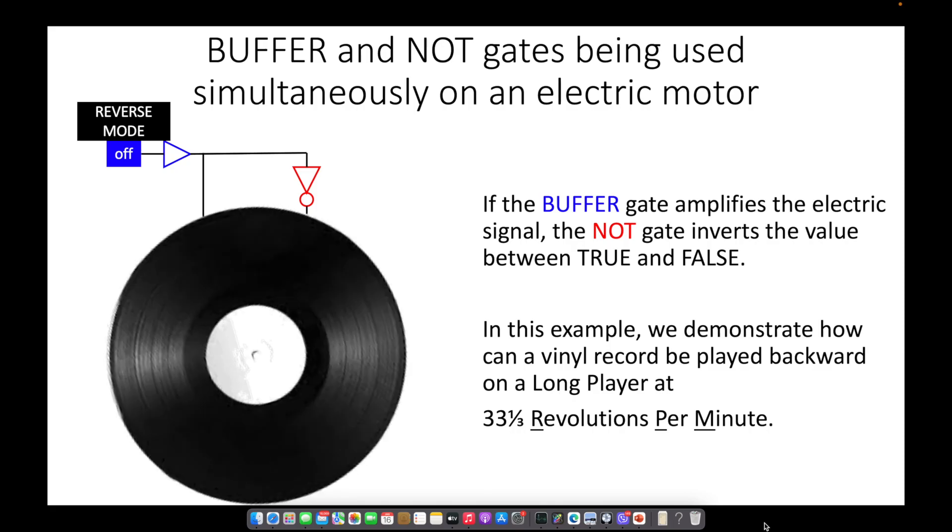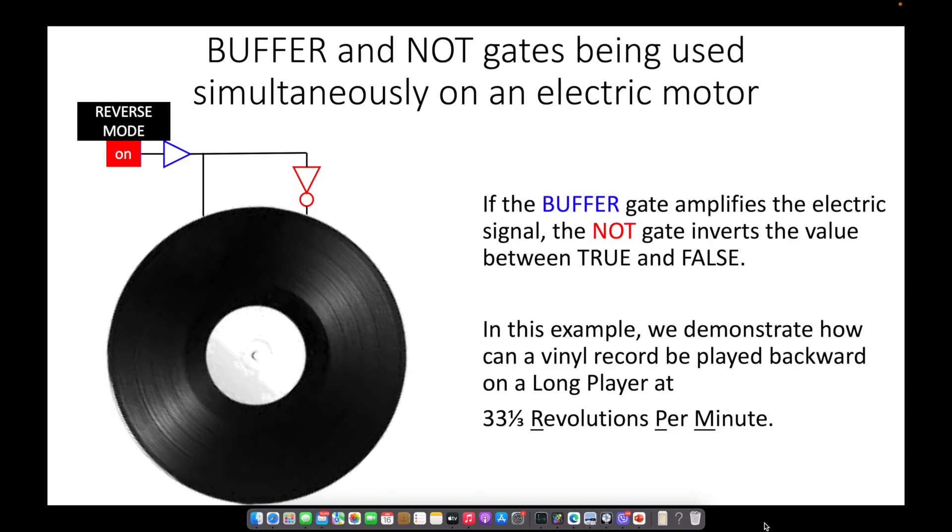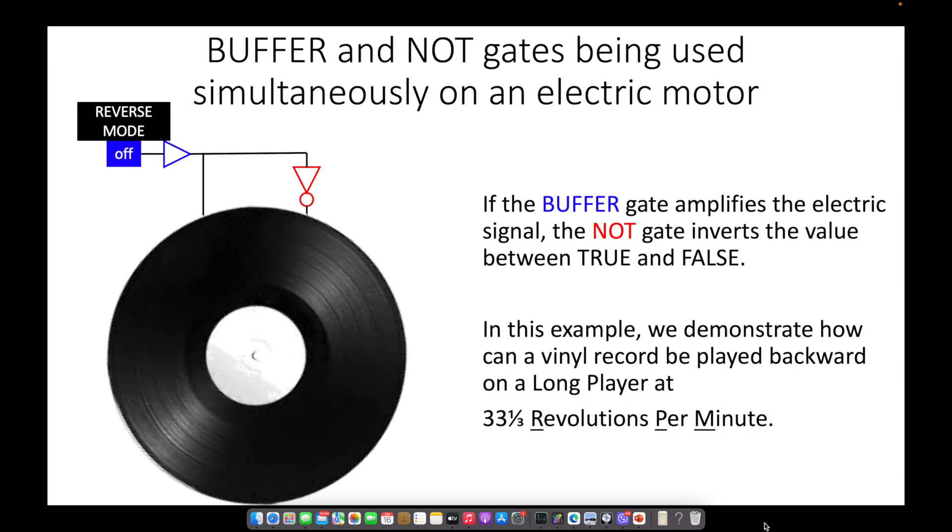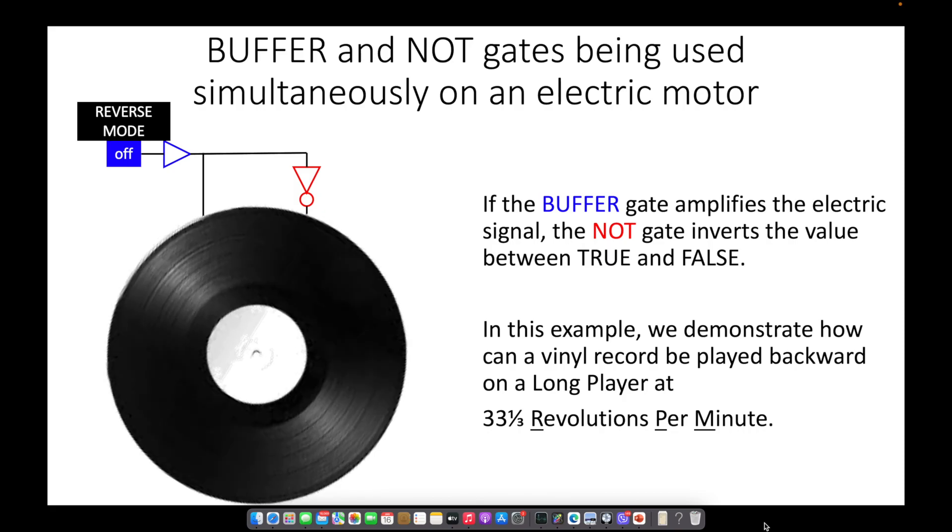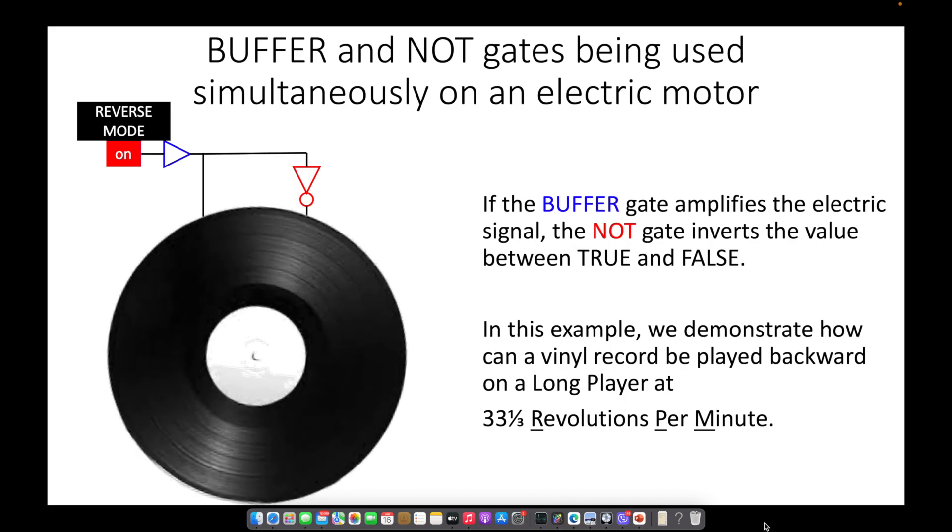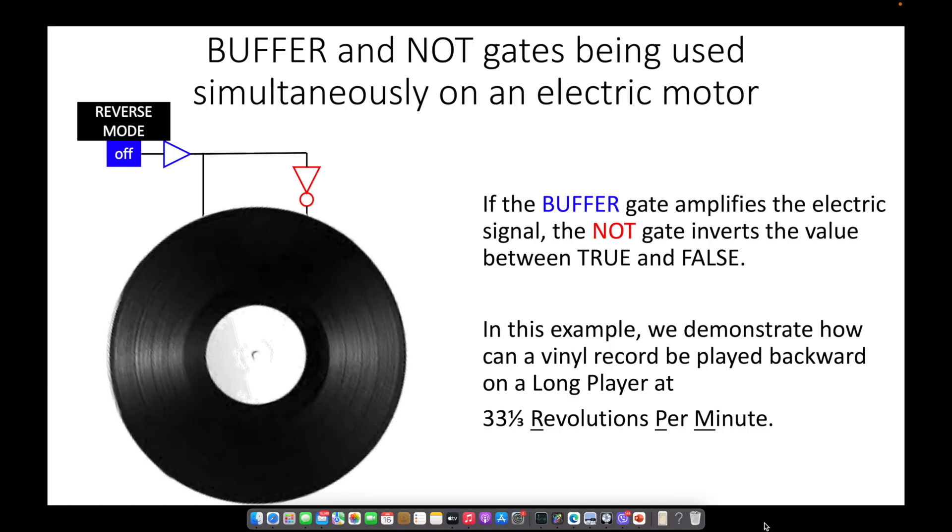If the buffer gate amplifies the electric signal, the NOT gate inverts the value between true and false. In this example, we demonstrate how can a vinyl record be played backward on a long player at 33 and 1 third revolutions per minute.